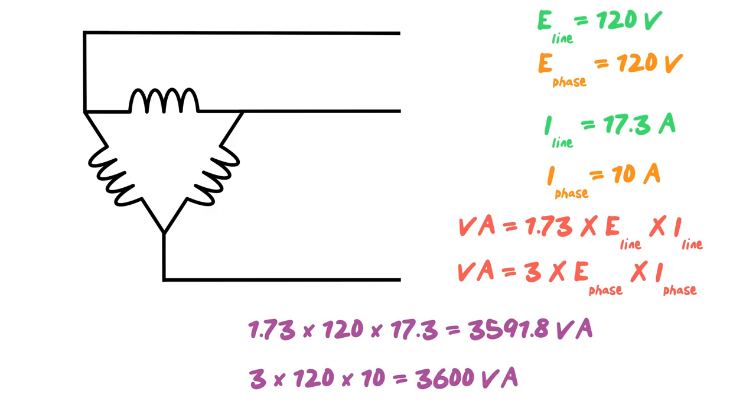So we've just basically proven, I know that you're going to argue with me over these, what does this work out to be, nine VA. But trust me when I say that 3,600 VA and 3,591.8 VA are pretty well the same thing. So there you go. We've walked through how to calculate power on a delta system. There's two ways you can do it. VA equals E line times I line times root three, or VA equals three times E phase times I phase.